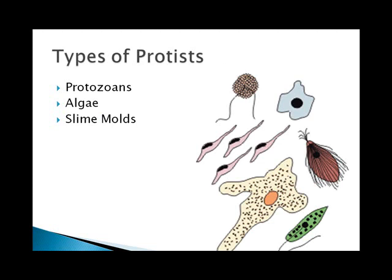There are three basic types of protists. The protozoans are the ones that act like animals. The algae are the ones that act like plants. And the slime molds are the ones that act like fungi. Basically, kingdom Protista is the catch-all kingdom for organisms that don't fit in the other three eukaryotic kingdoms.